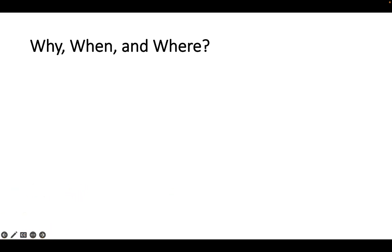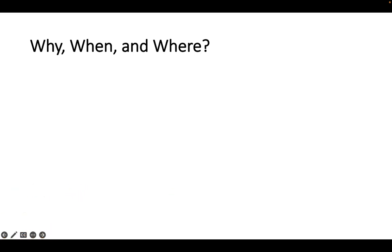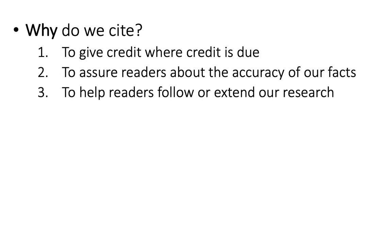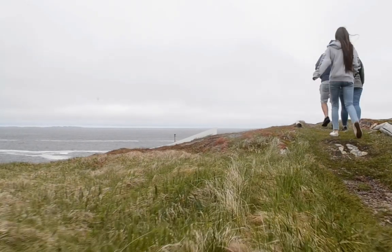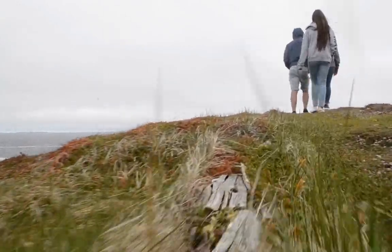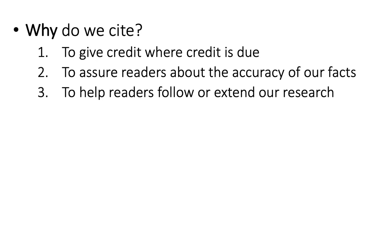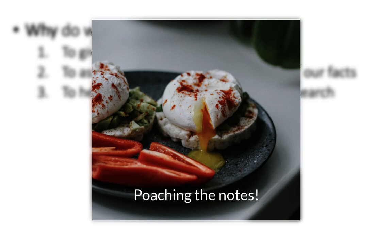The first thing we need to figure out is why we do citations at all. We cite for a few different reasons. First is academic honesty — we need to give credit where credit is due. Second, citations assure readers about the accuracy of our facts. A citation is a kind of breadcrumb trail that people can go back to and check to see if you're telling the truth. Third, citations are really important research tools — they help readers extend and follow the research in an article, and they're a beginning point for doing your own research.